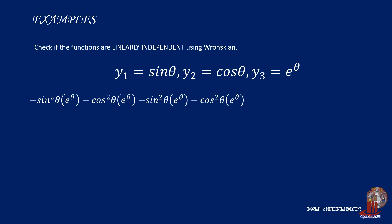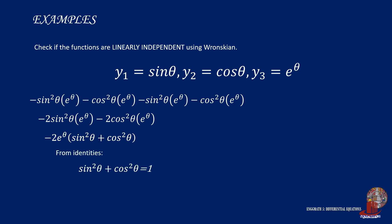With the reduced equation, we collect terms with sin theta and those with cosine theta, simplifying into negative 2 times e raised to theta times the quantity of sin squared theta plus cosine squared theta. Using the Pythagorean identity, sin squared plus cosine squared equals 1, the equation simplifies to negative 2 times e raised to theta times 1, which is the final determinant. Since it is not equal to 0, the three functions are linearly independent.